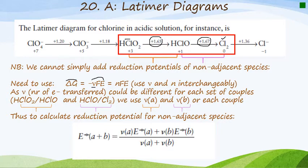So we've got two different couples and we're going to use the number of electrons. And we're going to label the orange couple A and then the number of electrons for the purple couple B. And then to calculate the reduction potential for non-adjacent species, non-adjacent meaning not next to one another, we use this form of the Nernst equation here.